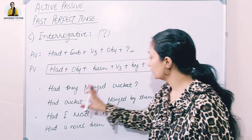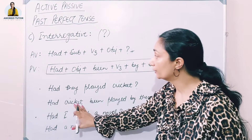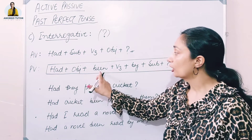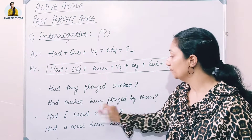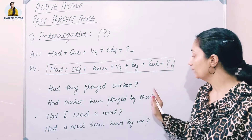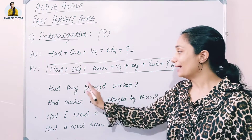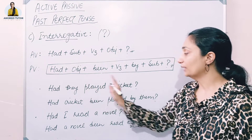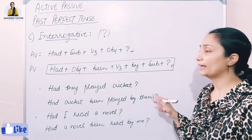For example: 'Had they played cricket?' — subject is they, verb third form is played, object is cricket. The passive becomes: 'Had cricket been played by them?' The sentence structure flips the object to the front and moves the subject to the end with 'by.'